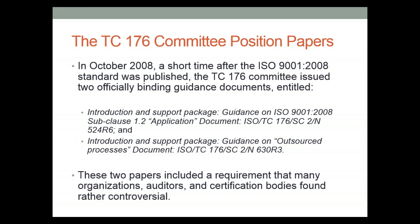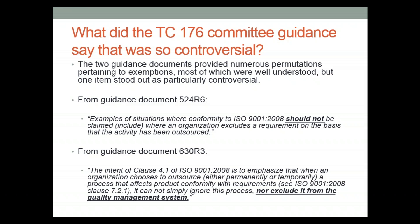Let's begin with some historical context — the TC-176 committee position papers. Back in October 2008, shortly after ISO 9001-2008 was published, the committee issued a couple of officially binding guidance documents intended to provide guidance on two specific items: Section 1.2, the application document — guidance document 524-R6 — and guidance document 630-R3 on outsourced processes. These two papers together introduced a requirement that many organizations, auditors, and even certification bodies found rather controversial, having to do with justification for exemptions.